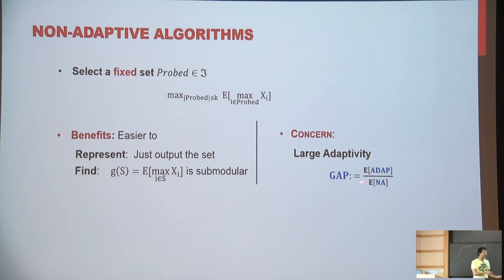The major worry, of course, is that now I've limited my algorithms to a subclass, and I might be losing a lot in my performance. So the optimal adaptive trees might be giving you a lot more value as compared to the optimal non-adaptive algorithm. So this adaptivity gap could be large. And the question is how large can this gap get?